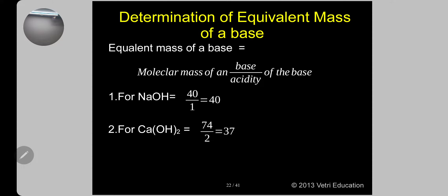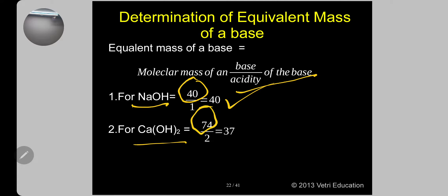Equivalent weight of a base = molecular mass of base ÷ acidity of base. Acidity is the number of replaceable OH⁻ groups. For sodium hydroxide NaOH: molecular weight = 40, one OH⁻, so equivalent weight = 40. For calcium hydroxide Ca(OH)₂: molecular weight = 74, two OH⁻ groups, so equivalent weight = 74 ÷ 2 = 37.